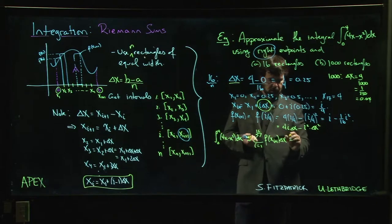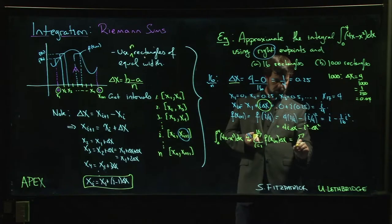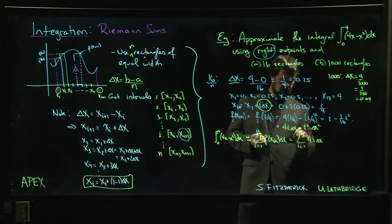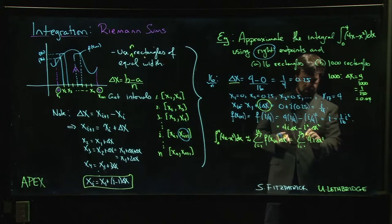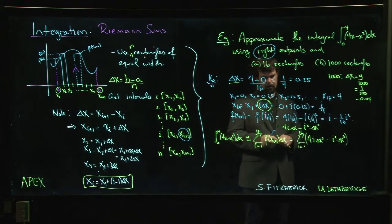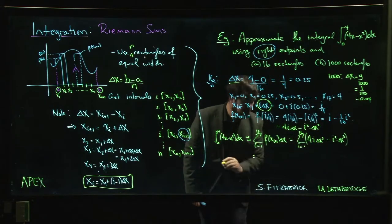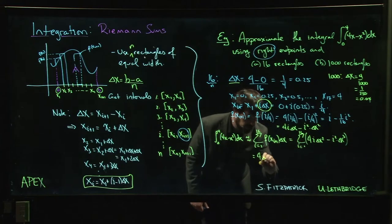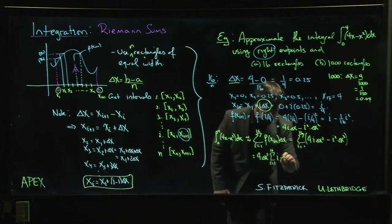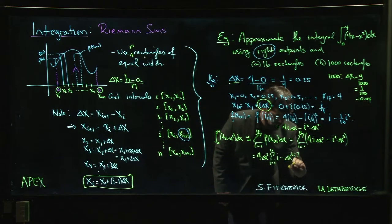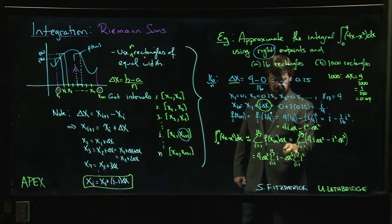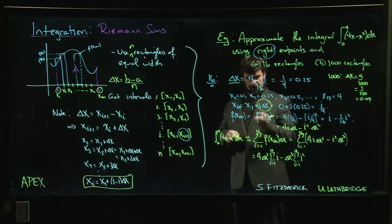We use summation properties. We get the sum from 1 to 16 of 4i delta x squared minus i squared delta x cubed. Summation notation says that's 4 times delta x squared times the sum of i from 1 to 16, minus delta x cubed times the sum of i squared from 1 to 16. Remember that we can bring out anything that doesn't depend on i.